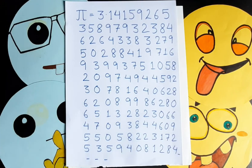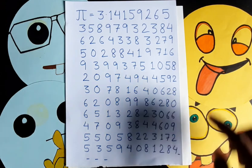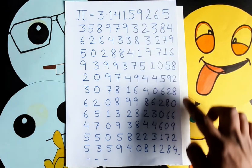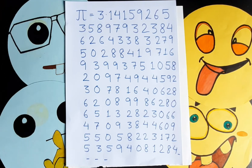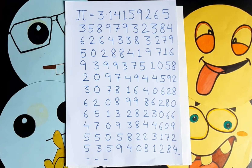Pi is not exactly 3.14 — that is not the actual value of Pi. Pi is equal to 3.1415926535… and it continues forever. This means that after the decimal point the digits go on infinitely. These values never terminate, which means Pi is an irrational number.